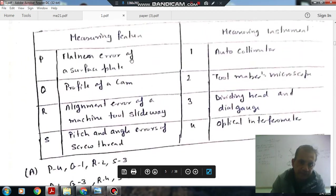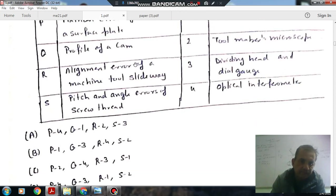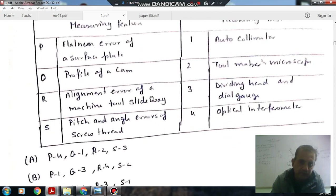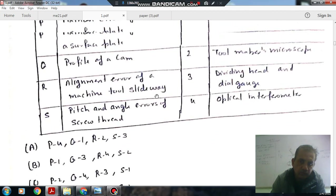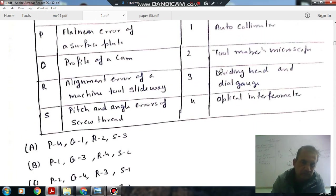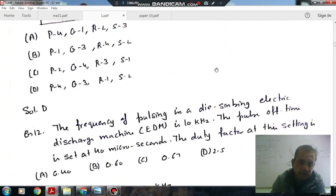Flatness error of the surface plate is measured by optical flat parameter and profile of the cam is measured by dividing head and dial gauge. Alignment error of a machine tool slide base is measured by auto-collimator and pitch and angle error of screw thread are measured by tool-makers microscope.